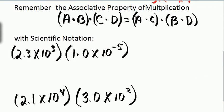The associative property for multiplication means we can rearrange our factors any way we want and still get the same result. So if I have a times b multiplied by c times d, I can rearrange these factors so that a times c times b times d gives the same result.